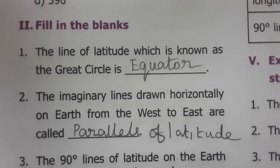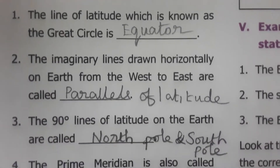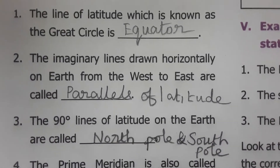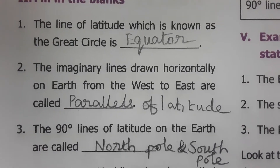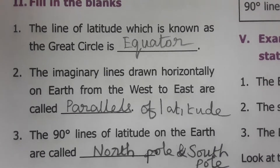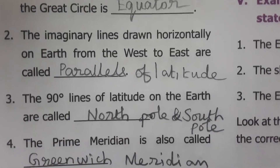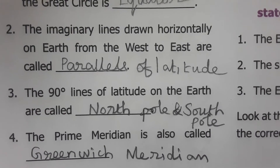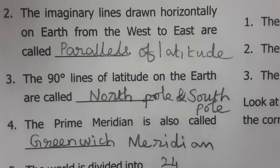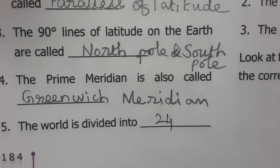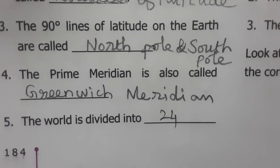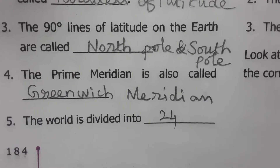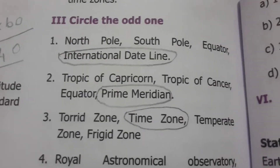Fill in the blanks: The line of latitude known as the great circle is the equator. The imaginary lines drawn horizontally on the Earth from west to east are called parallels of latitude. The 90 degree lines of latitude on the Earth are called the North Pole or South Pole. The prime meridian is also called the Greenwich Meridian. The world is divided into 24 time zones.